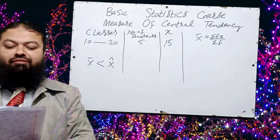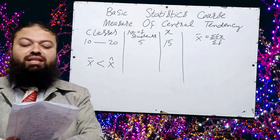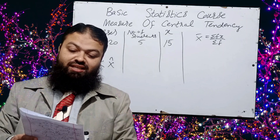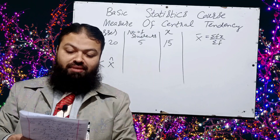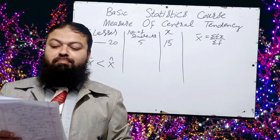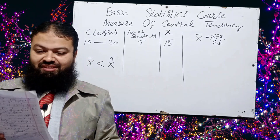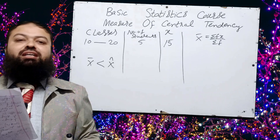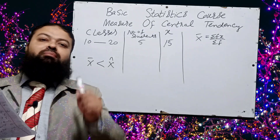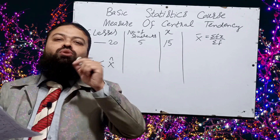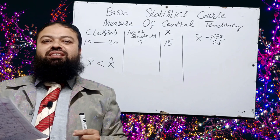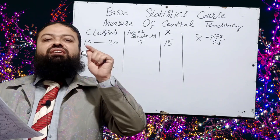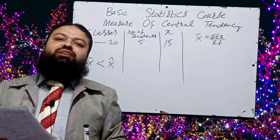Question number six: the suitable average for qualitative data — A: mean; B: geometric mean; C: weighted mean; D: median. Median is the correct option. For qualitative data, the median is the suitable average.